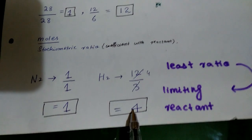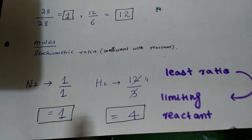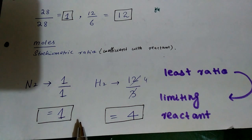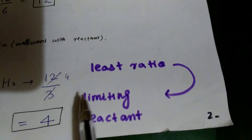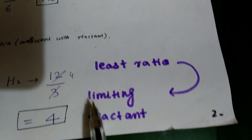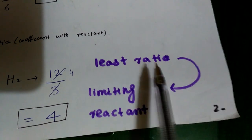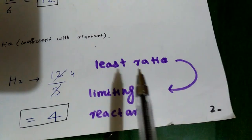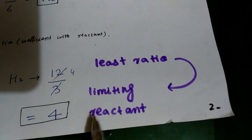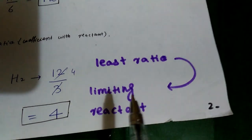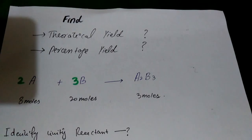Here we have their respective values after dividing. This is the actual trick: the least ratio — the lowest value — will be the limiting reactant.